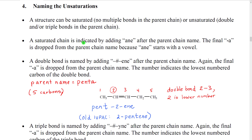Saturated chains are indicated by adding the suffix A-N-E after the parent chain name. Because '-ane' starts with a vowel, we drop the 'a' from the parent chain name. So for example, 'buta' would become 'but' and then we add 'ane', so we get the word 'butane'.